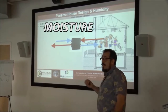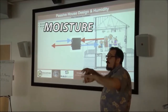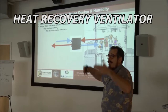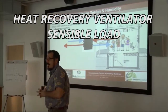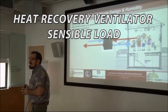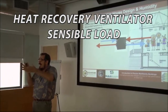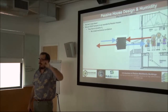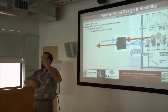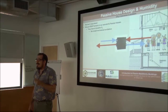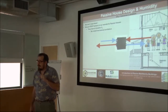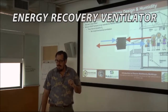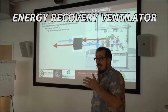There are two types of units. A heat recovery ventilator — an HRV — is a heat energy exchanger that exchanges the sensible load. It moves heat from one side to the other, which is how you get that incoming air arriving at 62 instead of zero. But what it doesn't do is move any moisture. A heat recovery ventilator only deals with sensible heat.